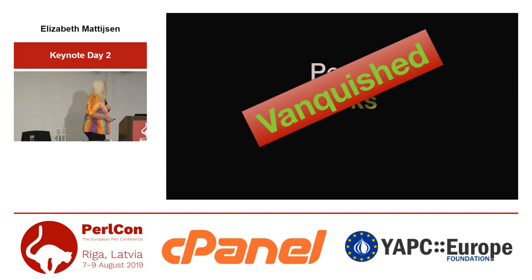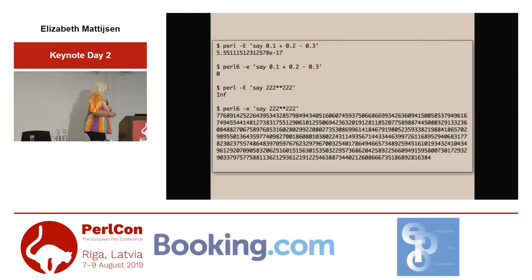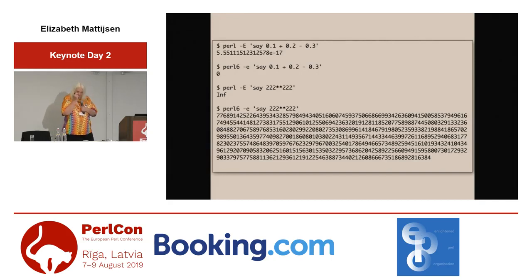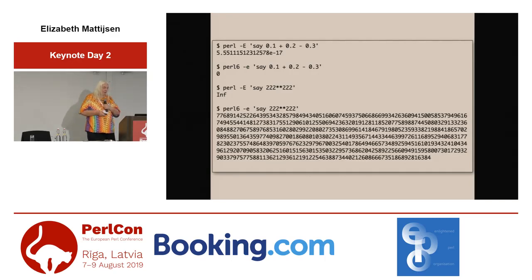And to show you something that really doesn't suck — sorry, Perl 5 — adding rational numbers actually works in Perl 6, and automatic upgrades to bigints also just works in Perl 6. It's quite a number. It's close to infinity, I guess, for some value of infinity.